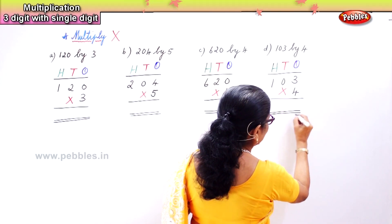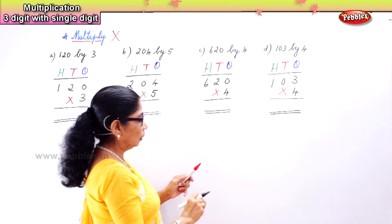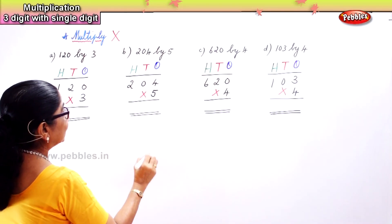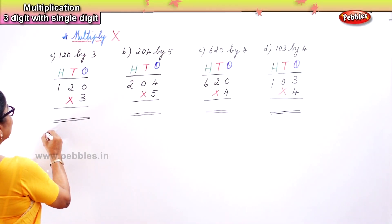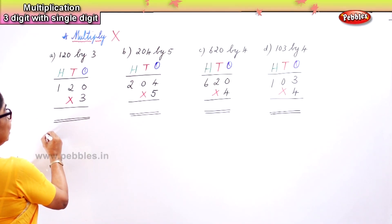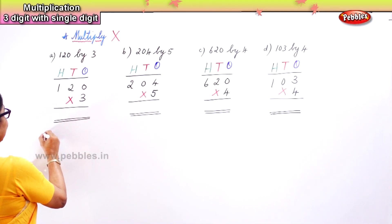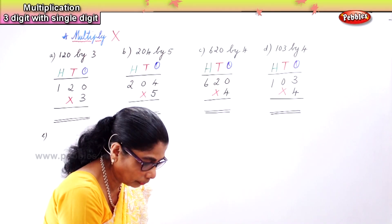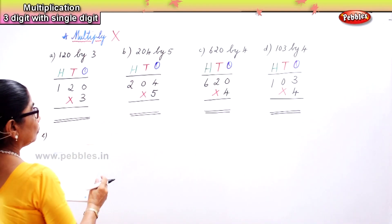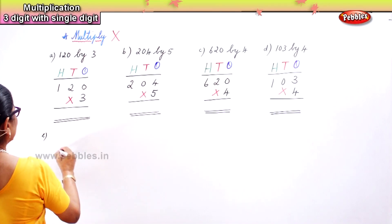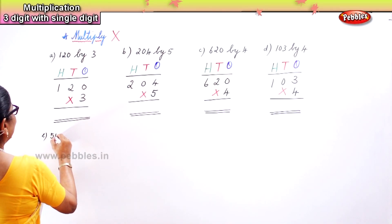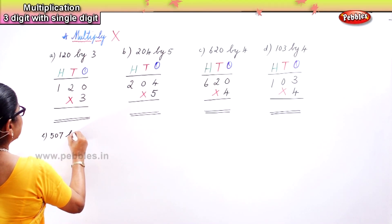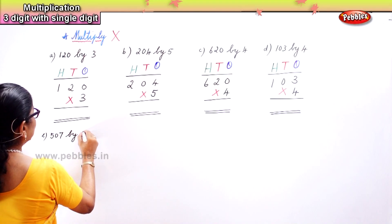Now we can have some more numbers, some more sums. Here: 507 by 2.